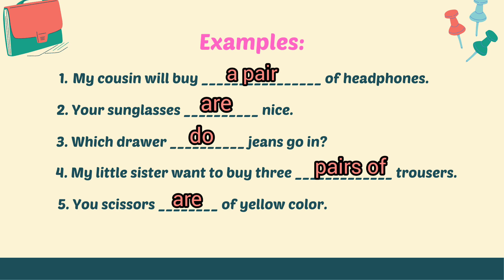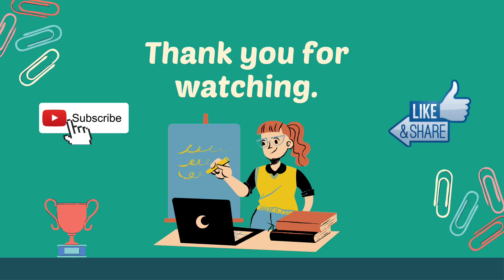For example: headphones, jeans, trousers, shorts. For these words, we use 'a pair of' or 'pairs of' to differentiate singular or plural. And because they are already in plural form, we always use plural verbs with them. I hope that you understood today's topic. Do give my video a big thumbs up and subscribe to my channel. I'll see you next time.